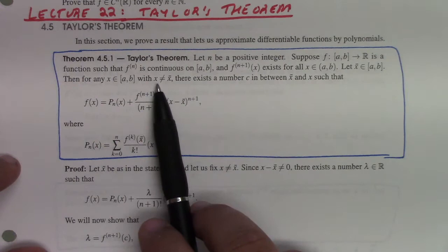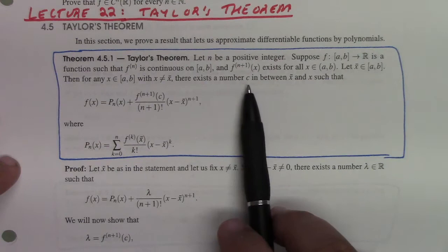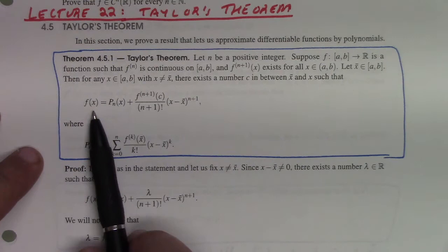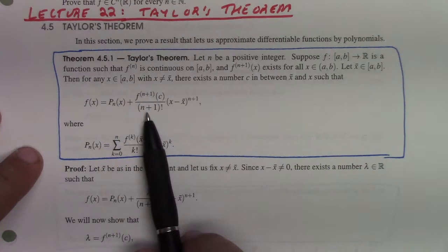Then here's the punchline: there exists a number c between x-bar and x such that f(x) equals p_n(x) plus the (n+1)th derivative at c, divided by (n+1) factorial, times (x - x-bar)^(n+1).